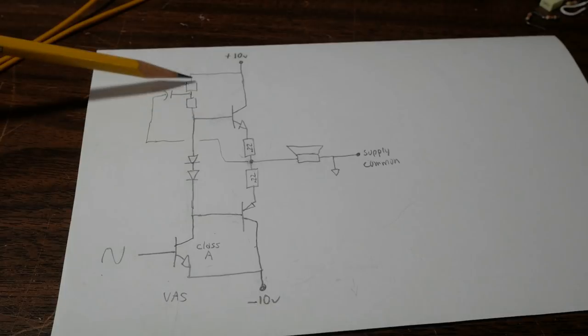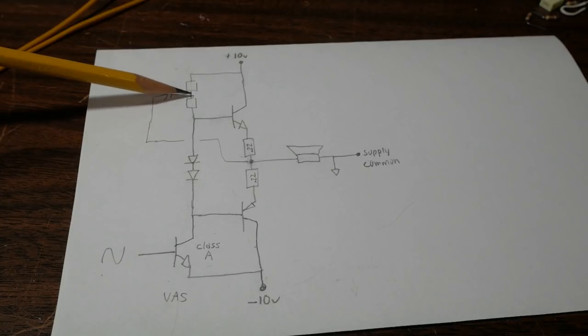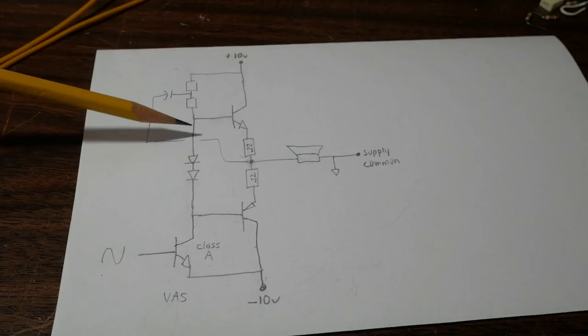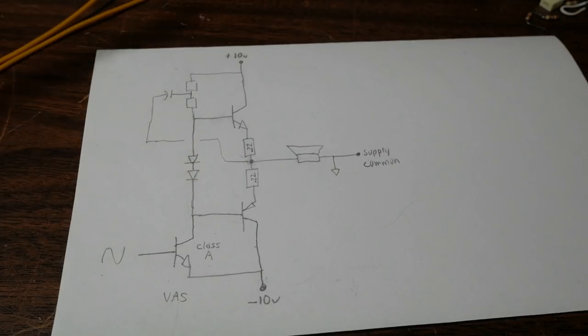So these resistors now act as a voltage divider and they'll be 5 volts at this point. So this capacitor charges up to 5 volts. So relative to the output node, we have 5 volts.